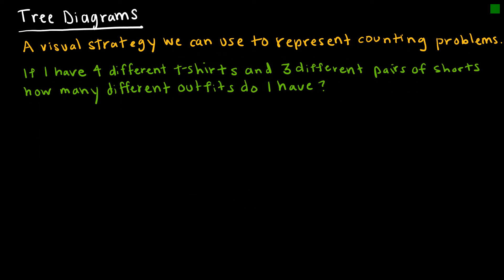Now I already know I have twelve different outfits, but what if I were asked to list what those outfits were? We can create a tree diagram. It's not going to be super helpful for us in this question, but essentially what a tree diagram does is give us a visual representation of a counting problem.